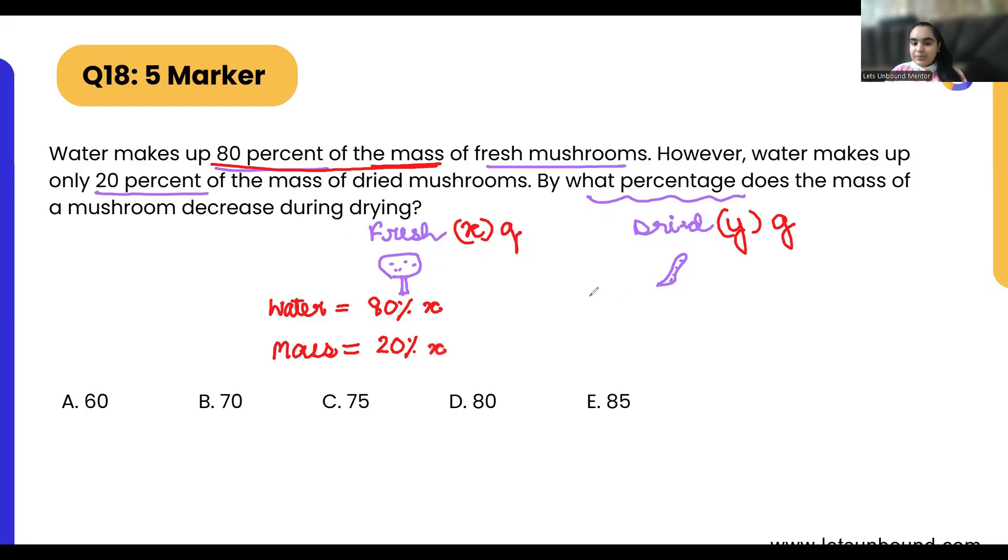And the same thing in dried mushroom, they have specified that water is 20 percent, 20 percent of y, that is the entire mass of this dried mushroom. If 20 percent is water, so the remaining flesh will be 80 percent. We know it is going to be very less, but yeah, 80 percent of y.